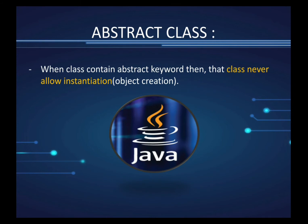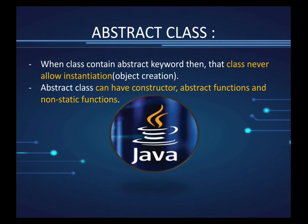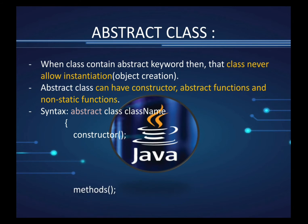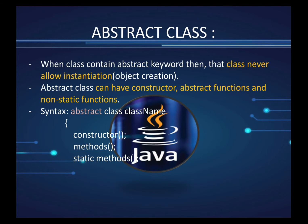An abstract class can have a constructor, abstract methods, non-static methods, and static methods. For example, in the syntax: write abstract before the class name, and inside the class you can have a constructor, normal methods, static methods, abstract methods, and even nested abstract classes.